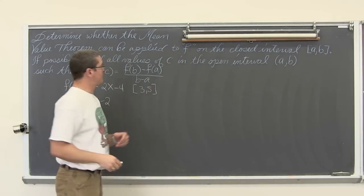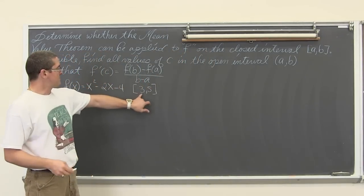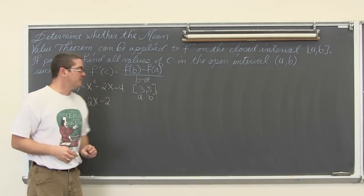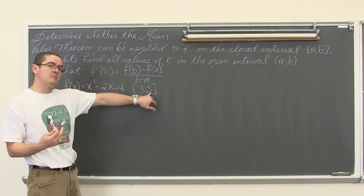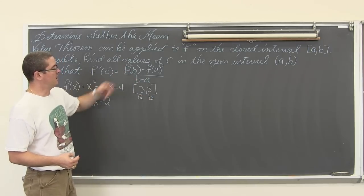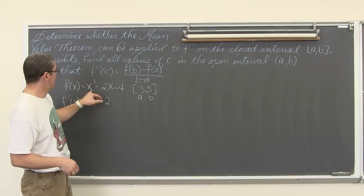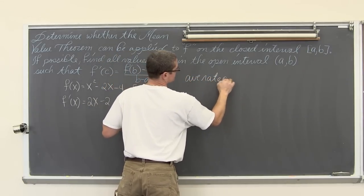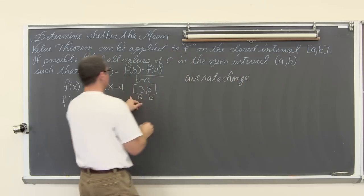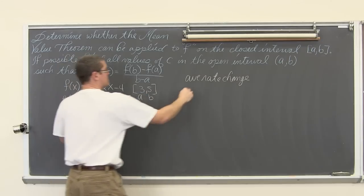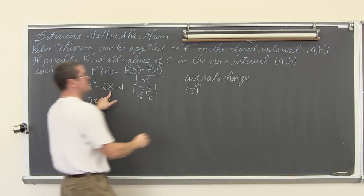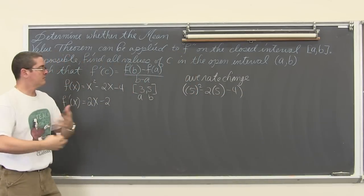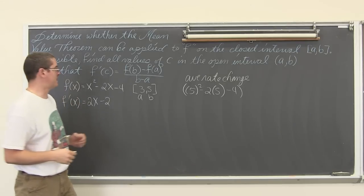So we need to find the average rate of change. So we are going to work through f(b) - f(a) over b - a. This will be a, and this will be b, our lower and upper bound. So you do want to read slope as left to right. So we want to go, we want to have our larger value be the value b, since it is first within the slope formula, average rate of change formula. So we have the average rate of change is equal to, let's see here, with the 5 we have got 5² - 2(5) - 4.